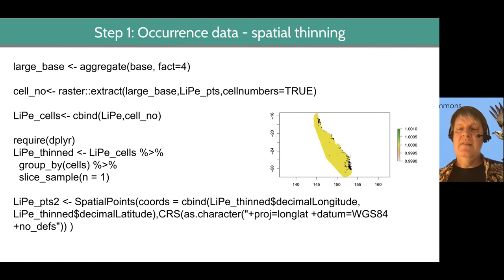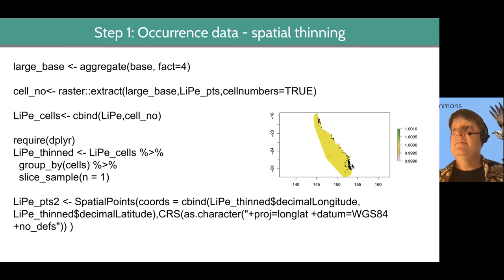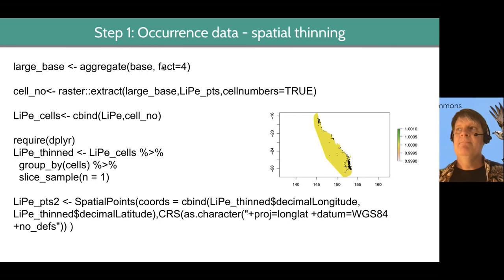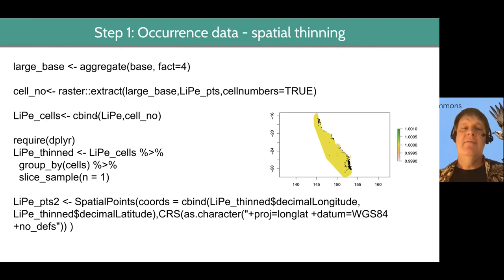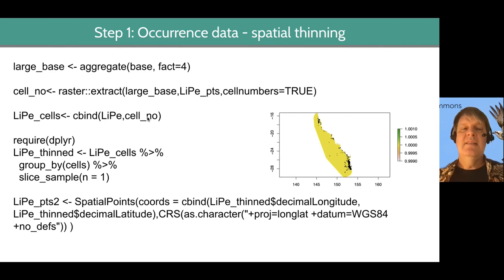Imagine if in the smaller cell size, each cell near Brisbane had on average five records. Now each larger cell is going to have 16 records on average. We've got a lot more records per cell using this larger resolution. Then we put all this together in one flat file — taking all our occurrence data including lats, longs, and whatever else was in the table — and we add the cell number.